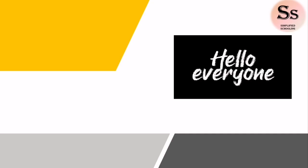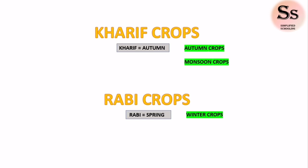Hello everyone, welcome back to Simplified Schooling. In this video, let's learn how we can simply memorize the examples of kharif crops and rabi crops. You can get a question in exam to give examples of both kharif crops or rabi crops. So let's learn it with the help of mnemonics. Kharif and rabi are Arabic words meaning autumn and spring respectively.